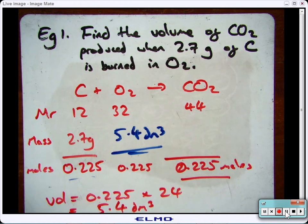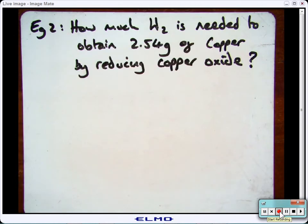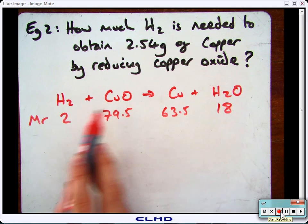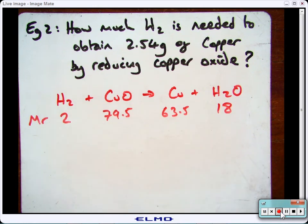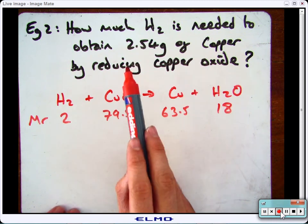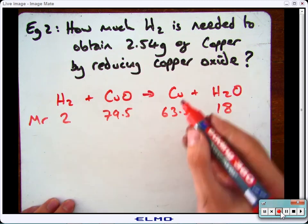So next example. How much hydrogen is needed to obtain 2.54 grams of copper by reducing copper oxide? So the first thing you do is you write out your balanced symbol equation, and fill in all the information that you already know. Again, you'll have a periodic table in the exam, so you'll be able to work out the molecular mass quite easily. Then, you know you've got 2.54 grams of copper, so that goes in here.